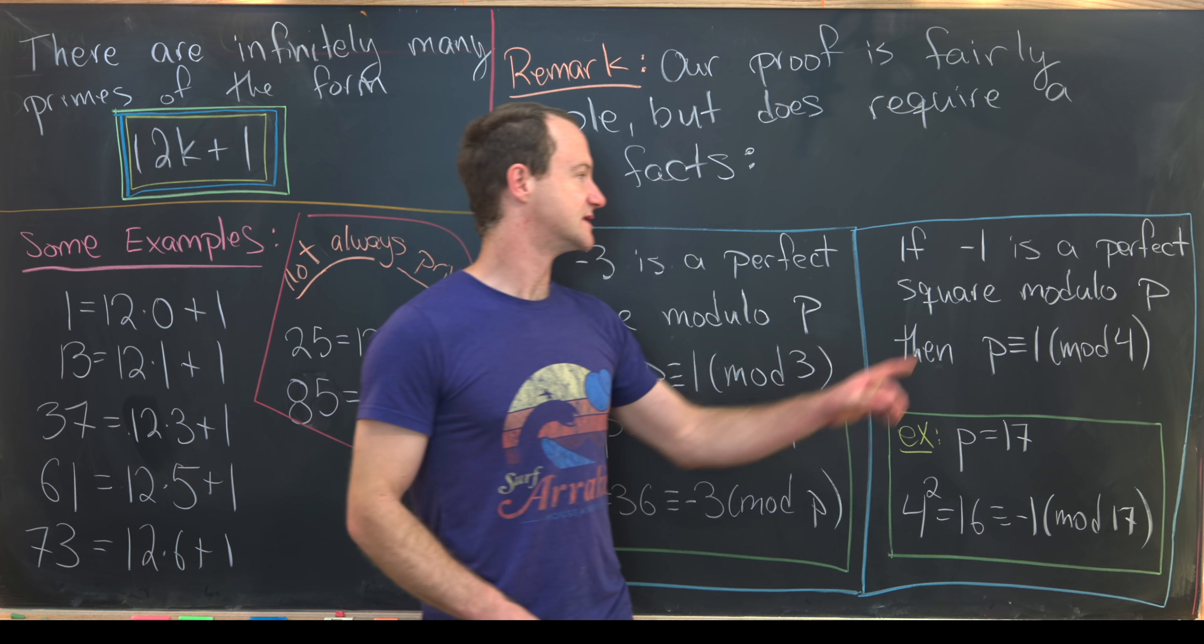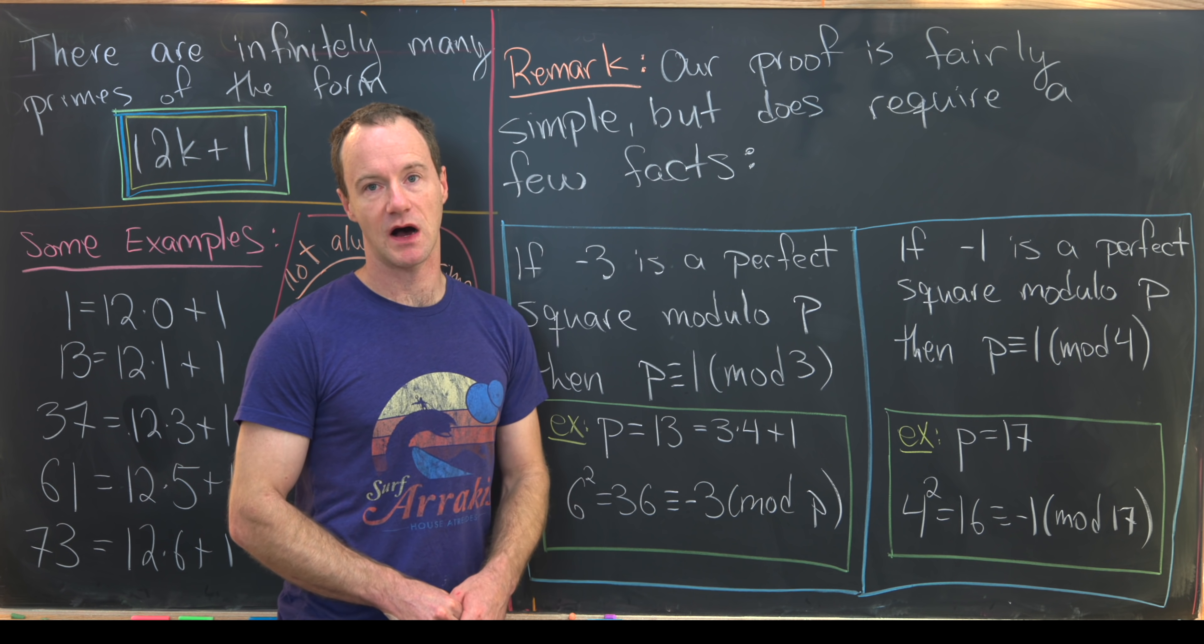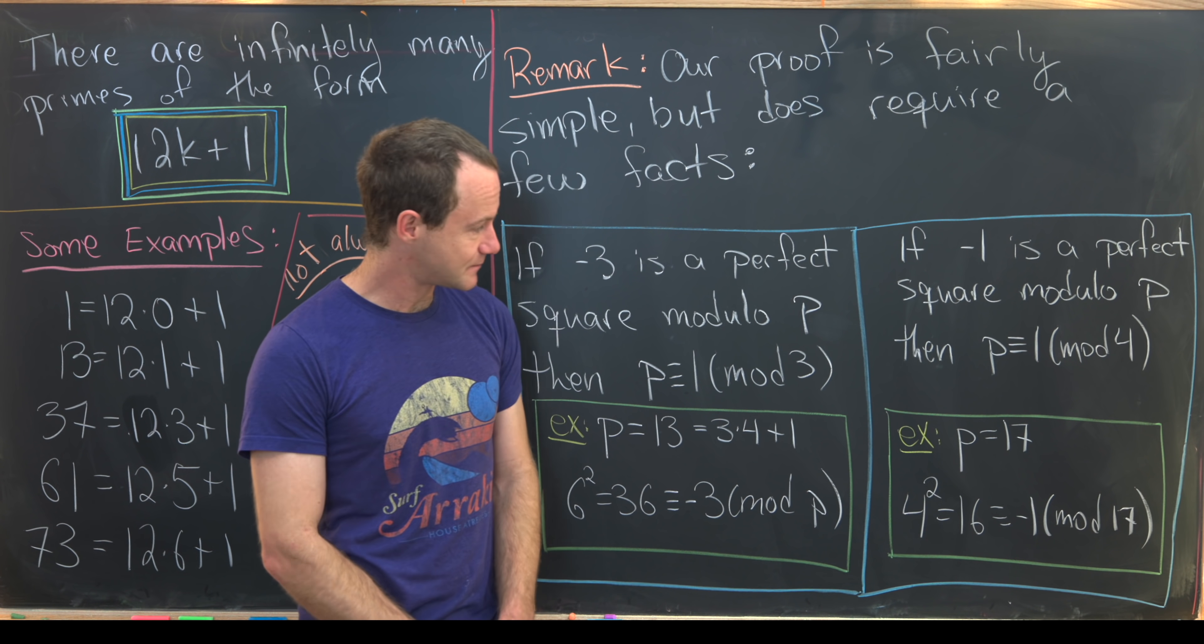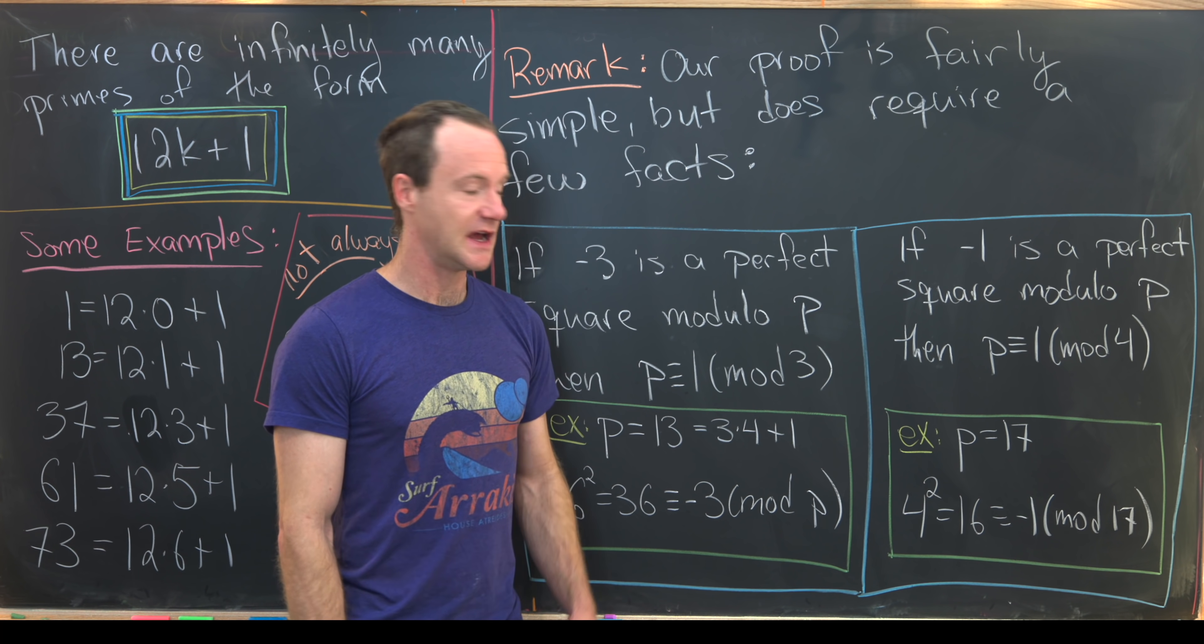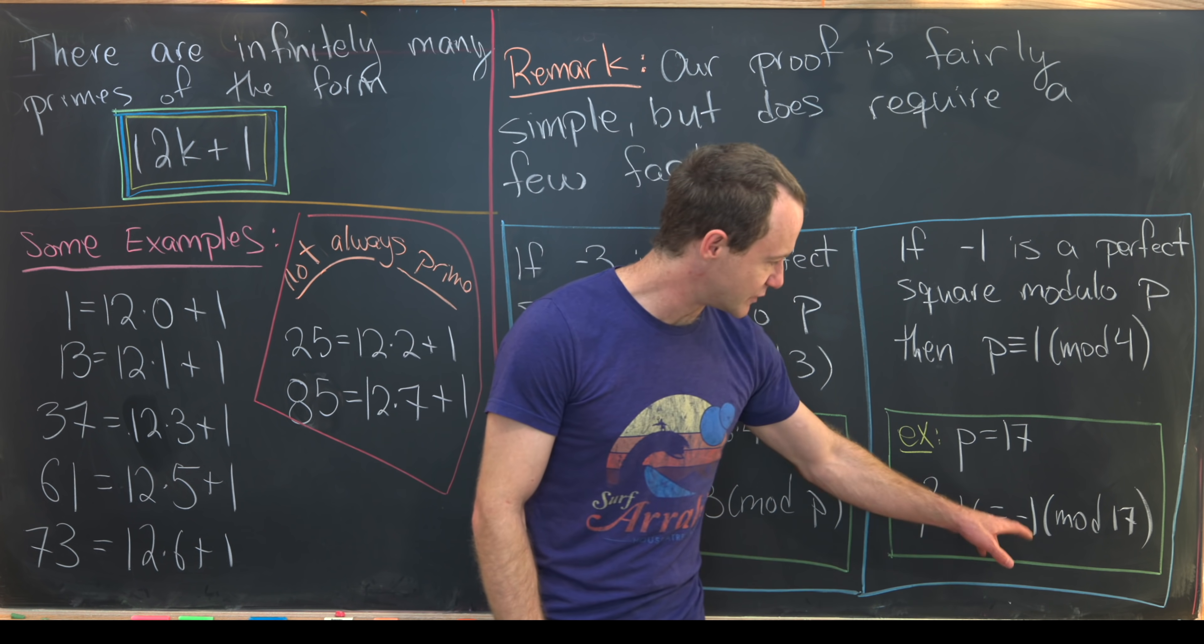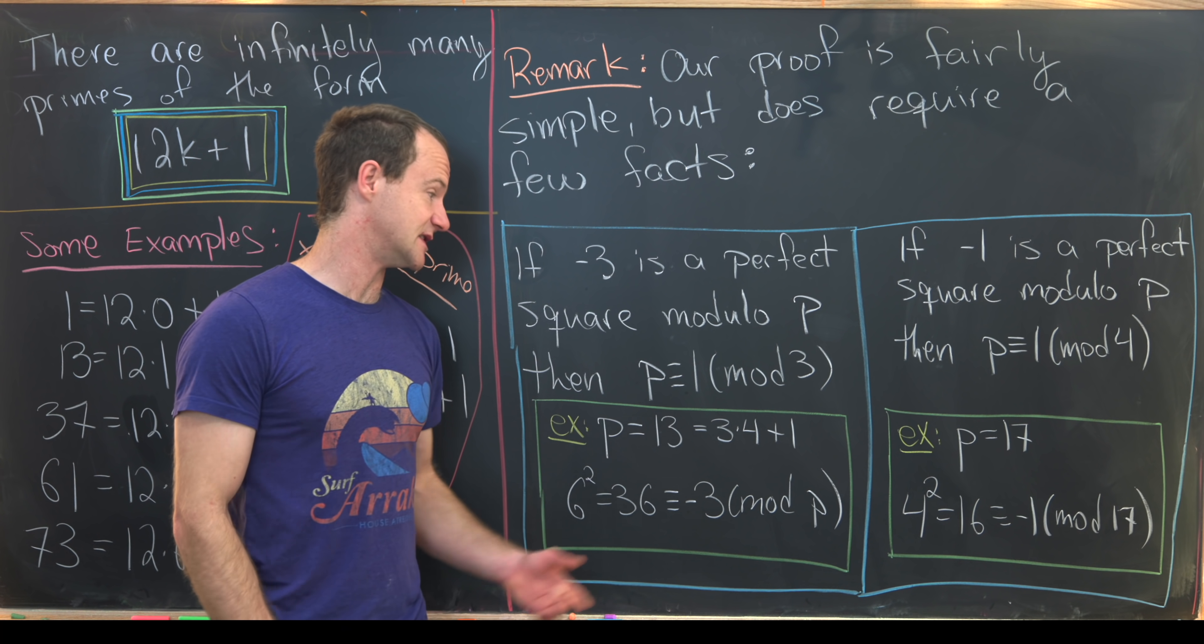Then the other fact that we'll use is negative 1 is a perfect square modulo p, if and only if p is congruent to 1 mod 4. So those are the only types of primes that allow for minus 1 to be a perfect square. Let's look at a quick example of that. So p equals 17. That's obviously 1 mod 4. It's 4 times 4 plus 1. And then if we look at 4 squared, we get 16. But 16 is 1 less than 17, which means it's minus 1 mod 17. So there's a situation showing that these two facts are true, at least in these cases.